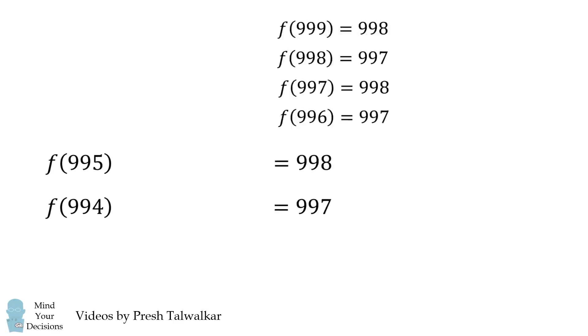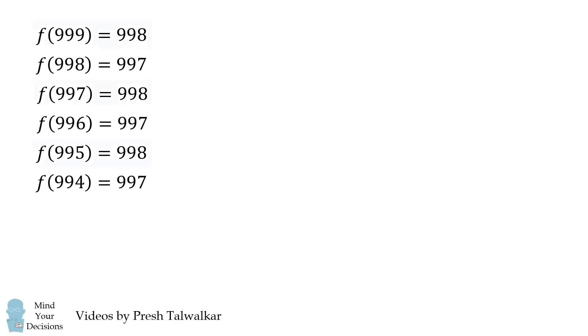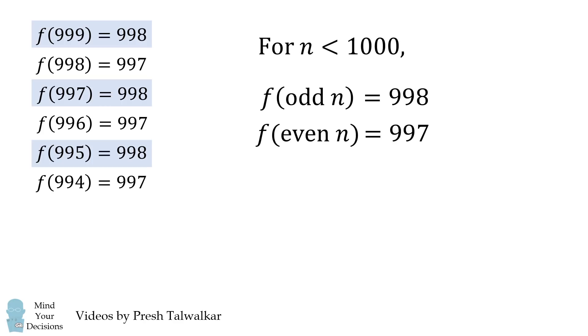So we see a pattern emerging. For values less than 1000, f of an odd number is equal to 998, and f of an even number is equal to 997. You can prove this by induction. Ultimately, we get that f of 84, since 84 is an even number, will be equal to 997. And that's our answer.